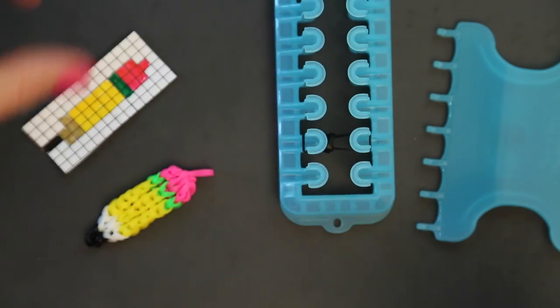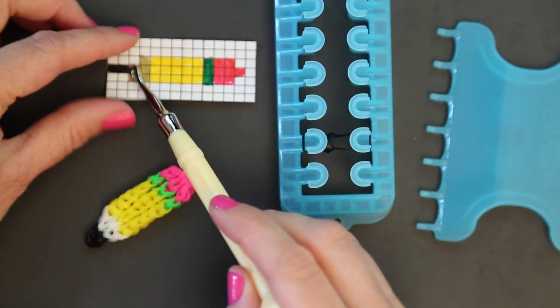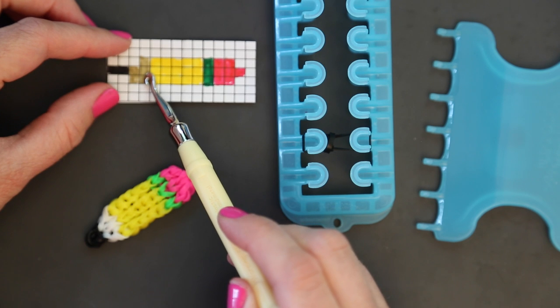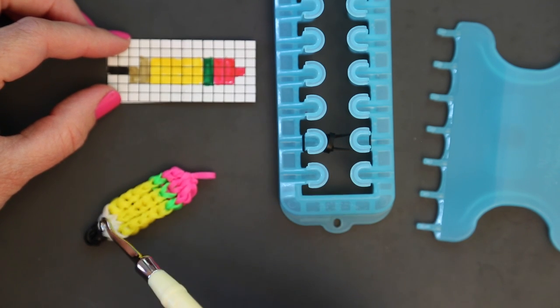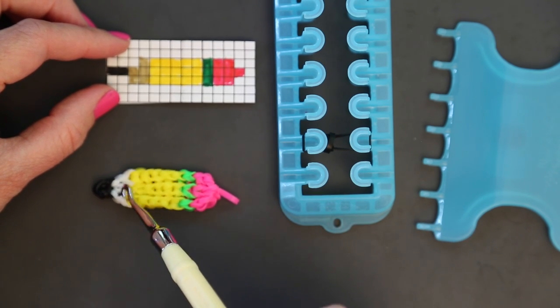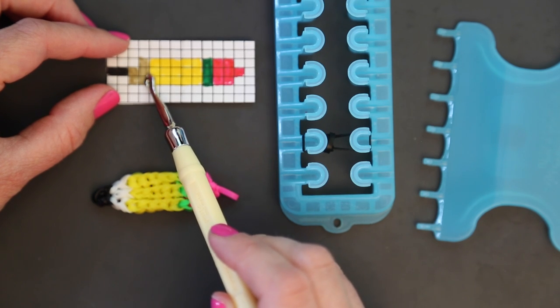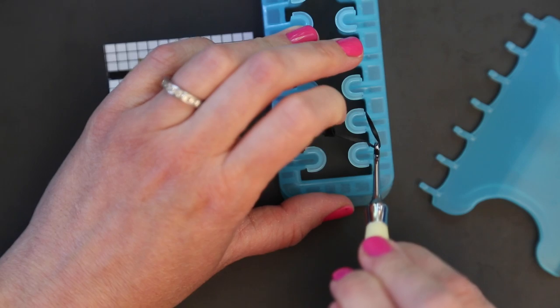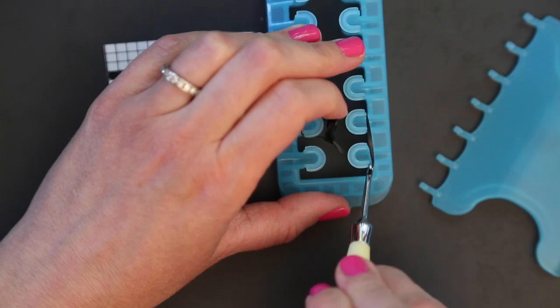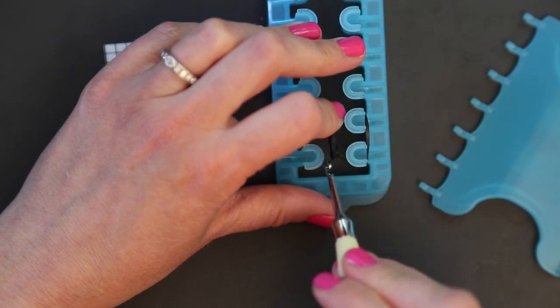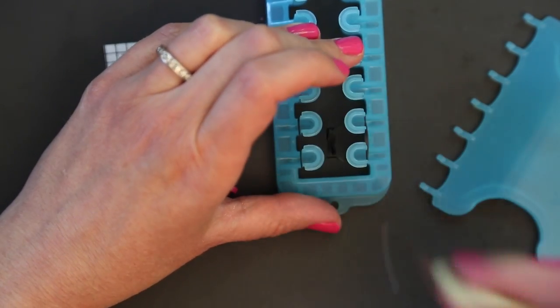And now we're going to be switching to the color that the wood would be. Unfortunately, rainbow loom hasn't yet come out with an alpha loom band that's in a wood tone, so I'm going to use white. Before I do that, I need to stretch this band over two pegs. And slide it down.